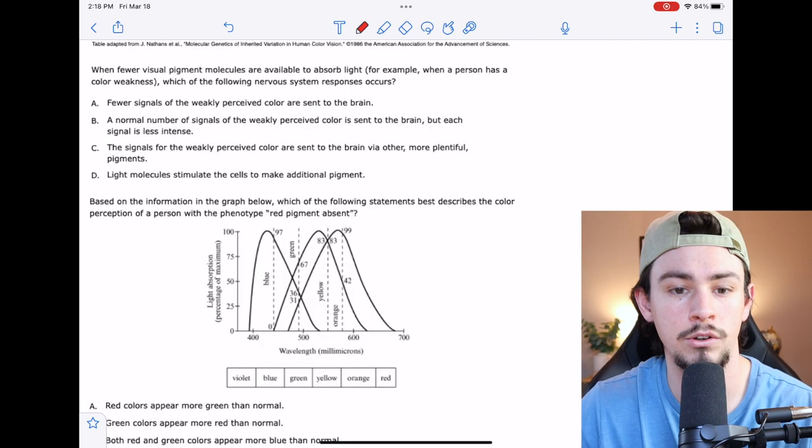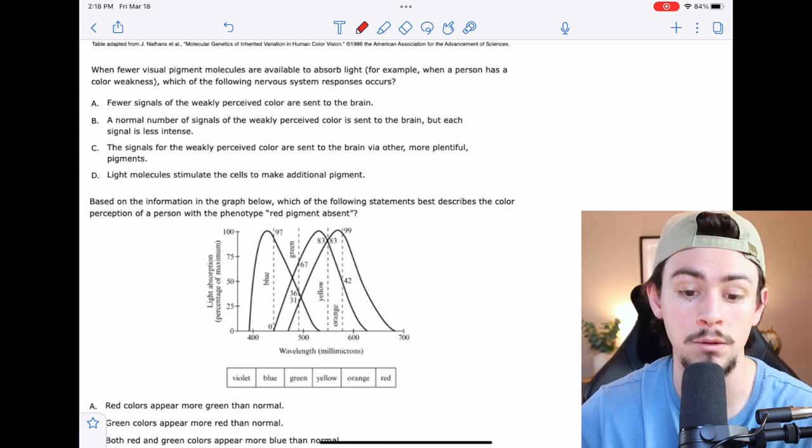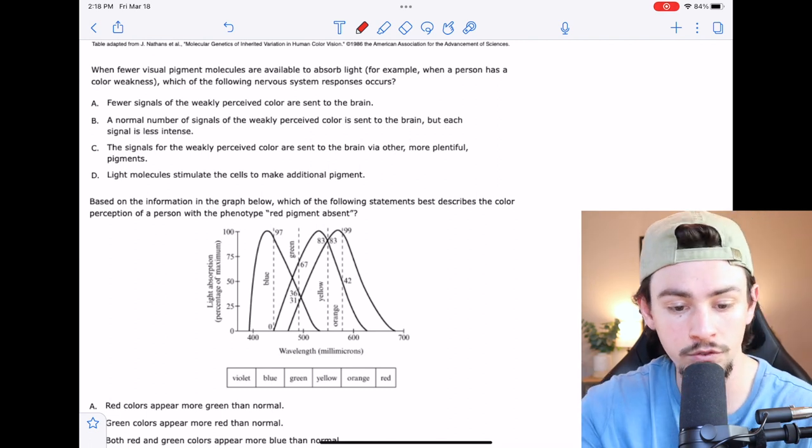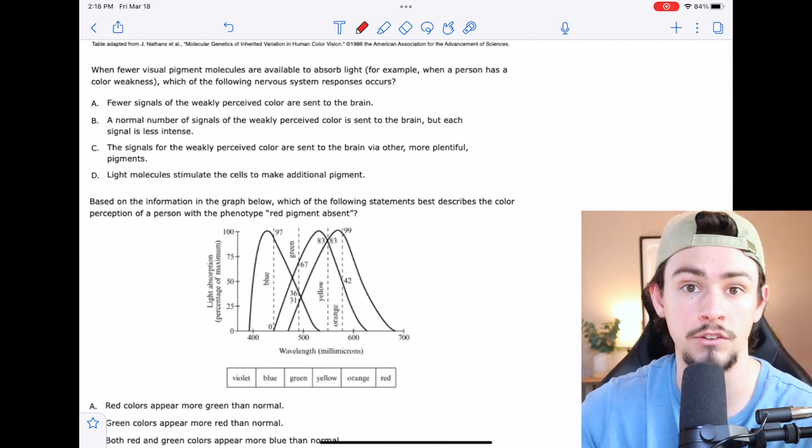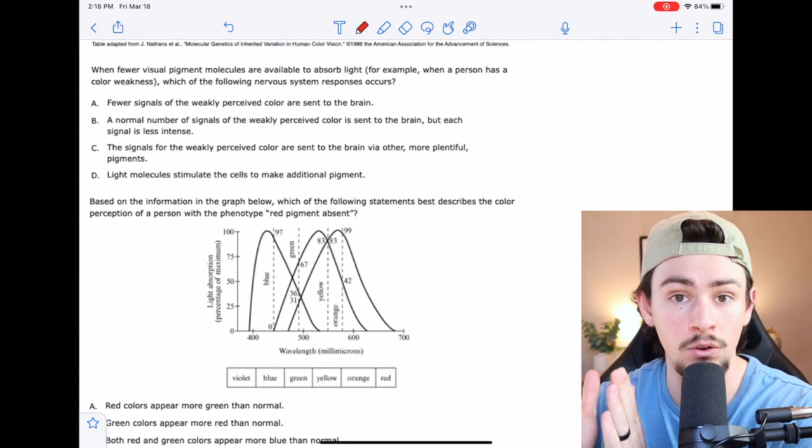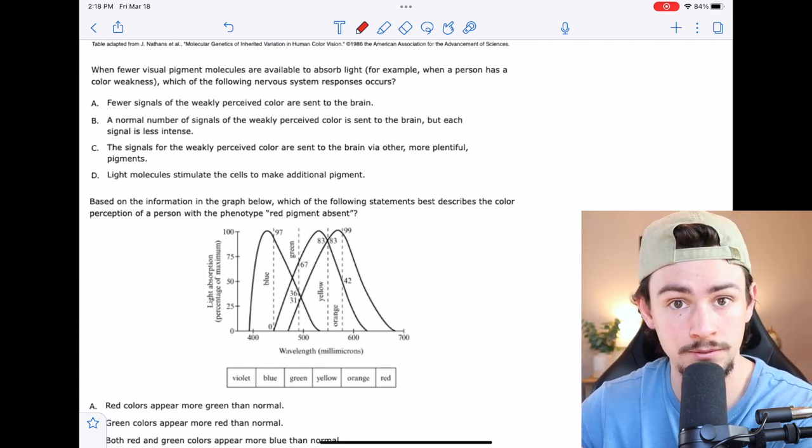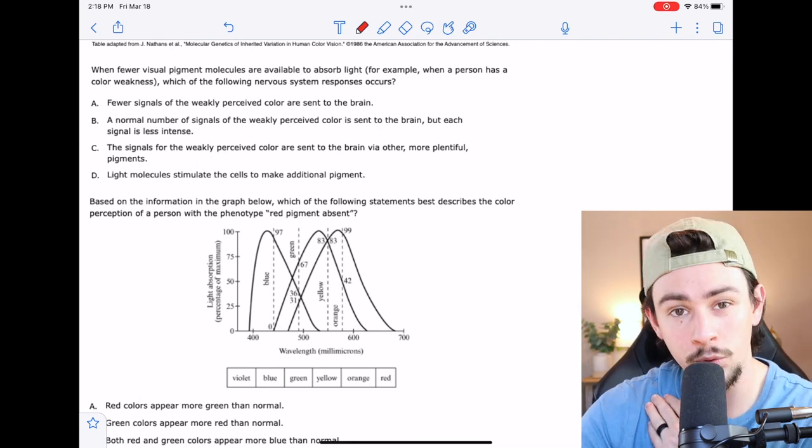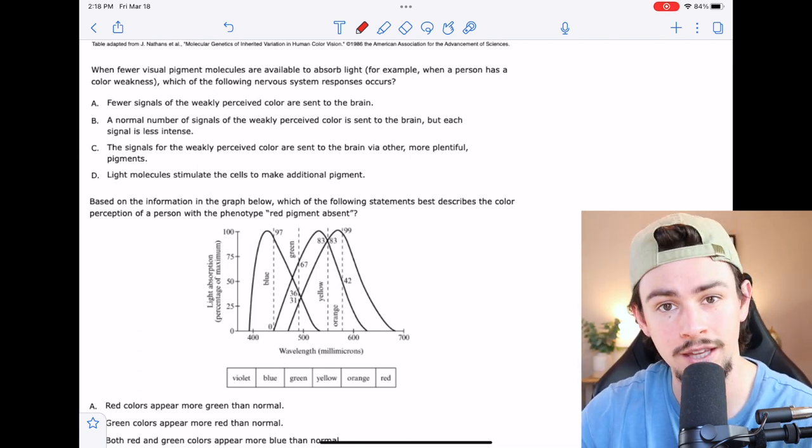Question number 36 says when fewer visual pigment molecules are available to absorb light, for example when a person has a color weakness, which of the following nervous system responses occurs? So they're essentially just asking us how does light absorption work and how does the pigment absorption translate to the nervous system? And if we were to inhibit that or weaken that, what would that look like?